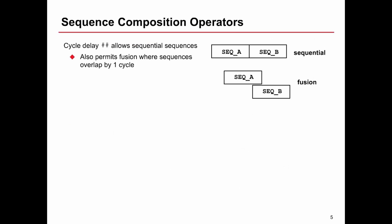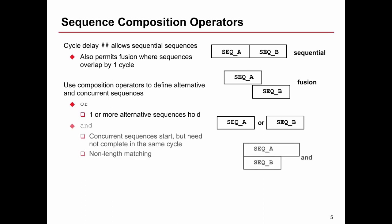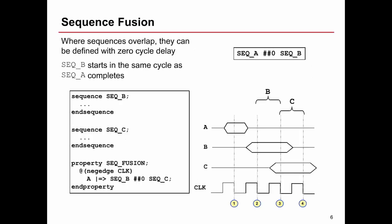Now we describe some sequence composition operators — operators that describe relationships between sequences. The first operator we saw from the very beginning was ## (hash-hash), which performs concatenation of sequences. Another one is fusion. There is an OR operator which allows one or an alternative number of sequences to hold. Concurrent sequences which start at the same cycle but don't necessarily end at the same cycle is called non-length matching, using the AND operator. There is also length matching, which means two sequences of equal length, using INTERSECT.